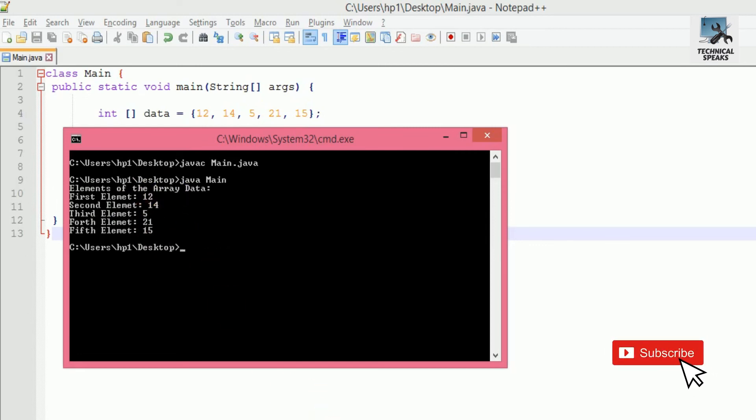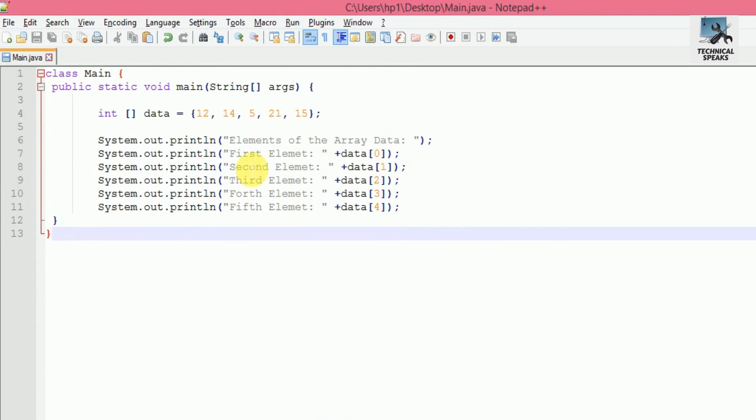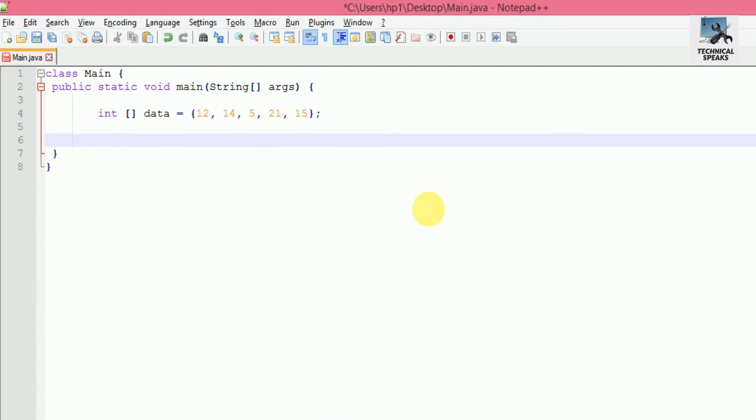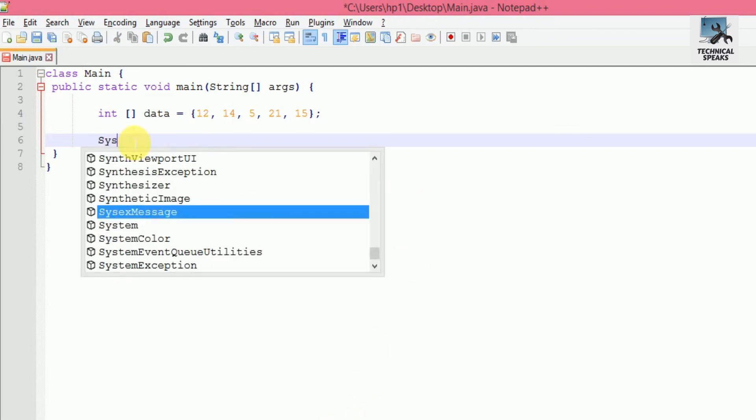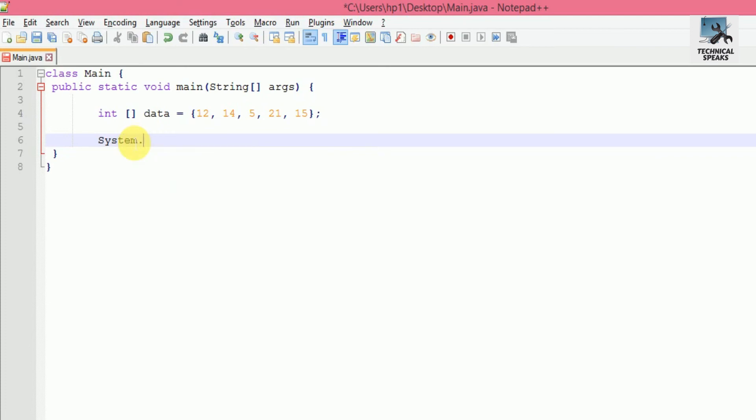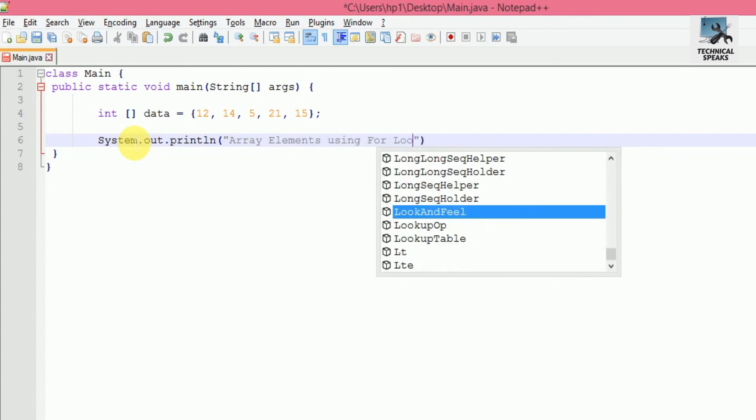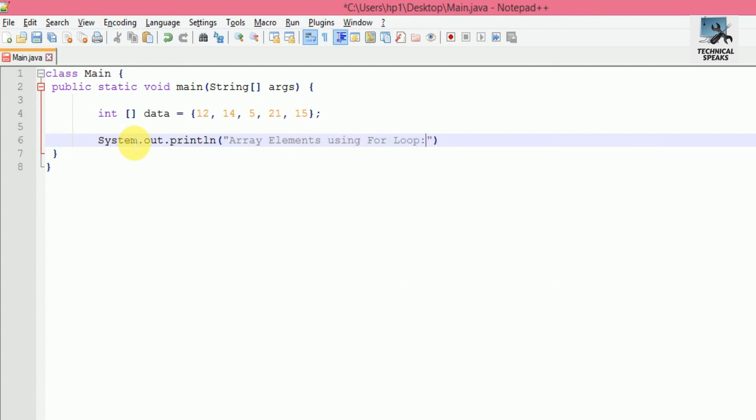Now let's see an example for accessing array elements using for loop. I'm using the same program. Let's add a for loop to access the array elements. First, let me add a print line statement: System.out.println, and inside the braces I'm passing array elements using for loop. Now add the for loop: for(int i equals 0; i is smaller than data.length; i plus plus), then simply print like System.out.println, inside the braces pass